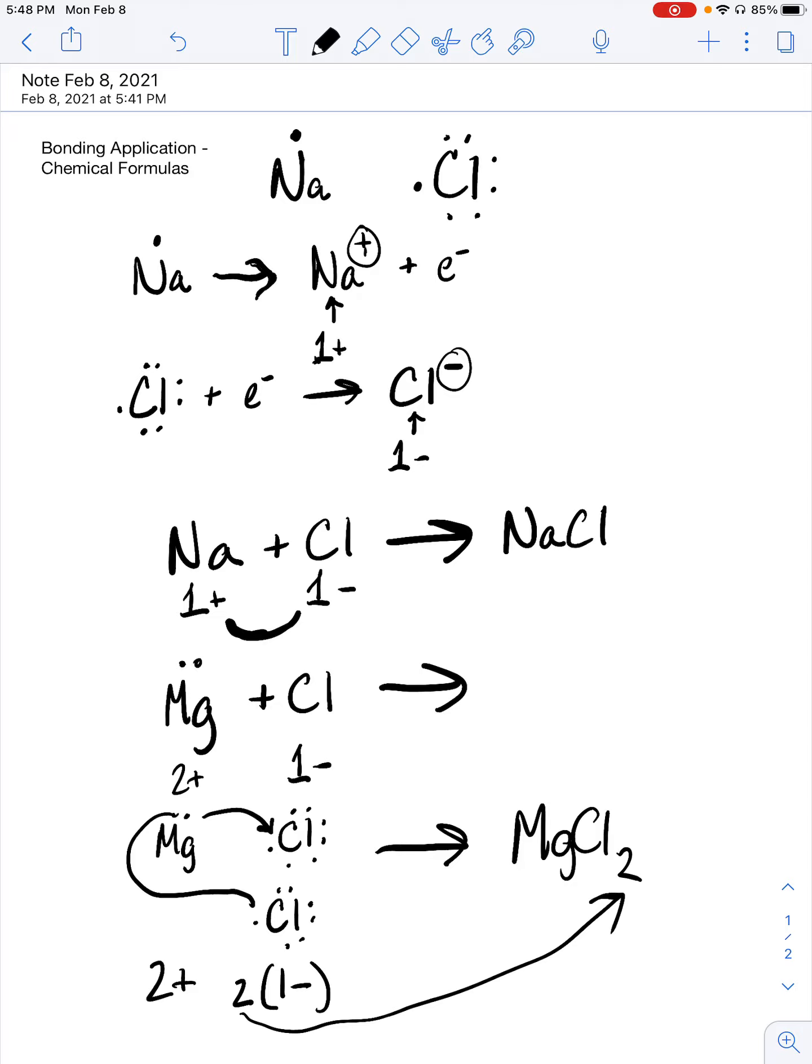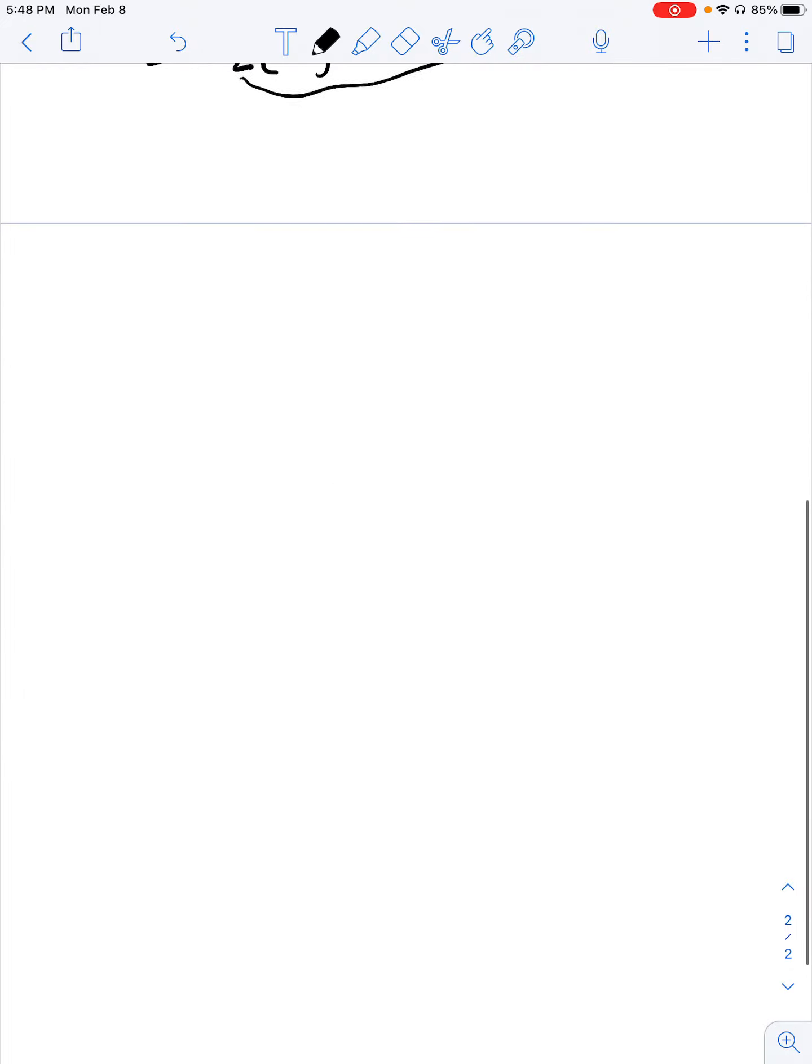Let's take a look at a couple more applications. Another piece that you've been given are polyatomic groups. This is a handout that was provided as part of today's lesson, and you're going to need to learn these because it's really important to know these. They don't show up on the periodic table, but they're almost as common in compounds as elements.